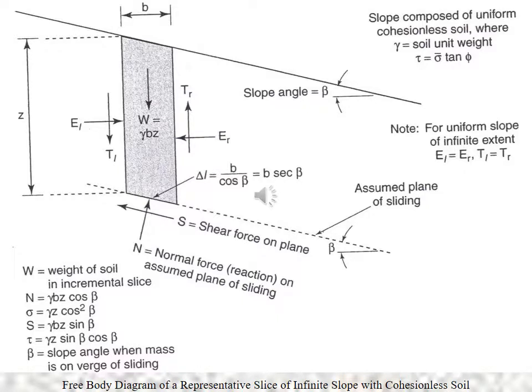For an infinite slope, an element is taken where the horizontal width is B and the vertical depth is Z. The shear force at the bottom opposes motion, the normal stress acts perpendicular to the base, and the weight of the element acts vertically downwards. The effective stress is denoted with a bar, and the shear strength is given by tau equals sigma-dashed times tan phi.